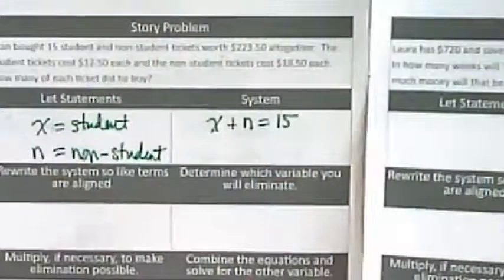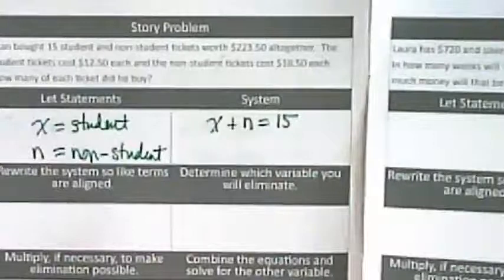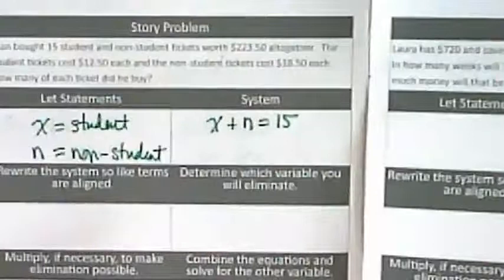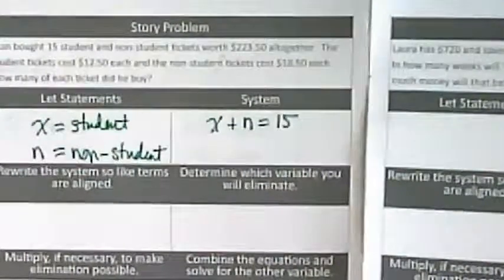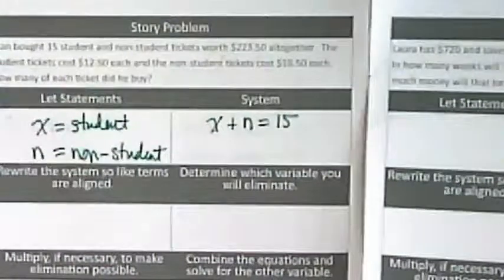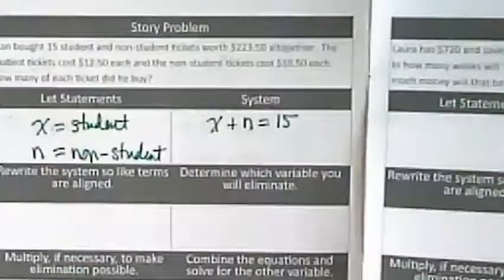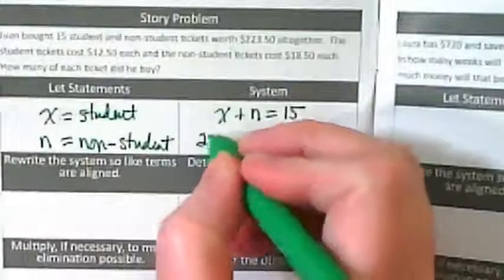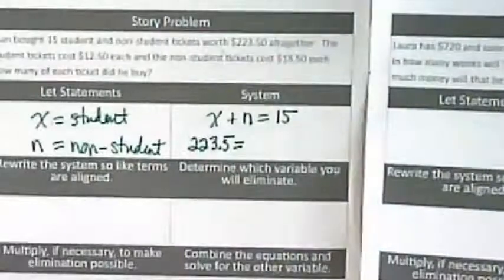Typically with a system, when there's money, there's going to be one equation that has the money in it, and the other equation that's going to be just the numbers, the count, how many of things. The rest of that sentence says 15 student and non-student tickets worth $223.50 altogether. That means for my second equation, it's going to equal $223.50.